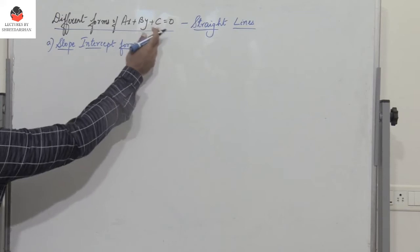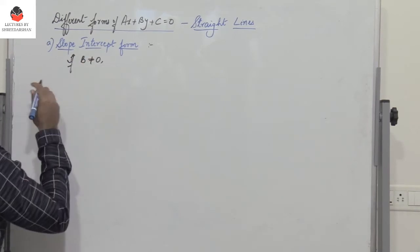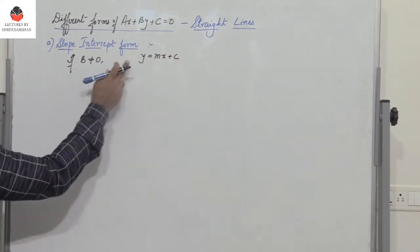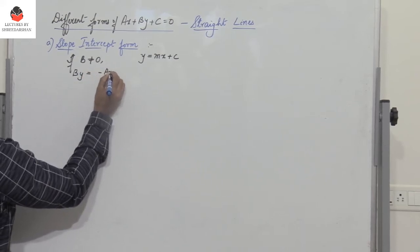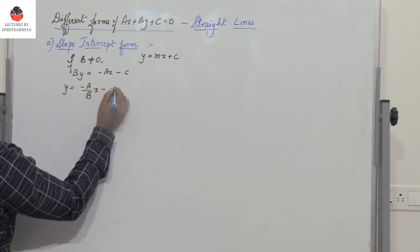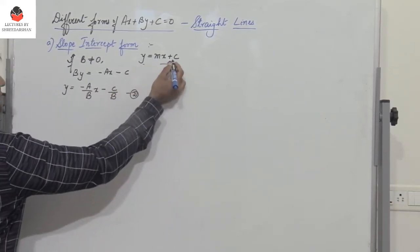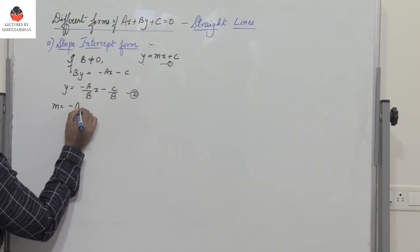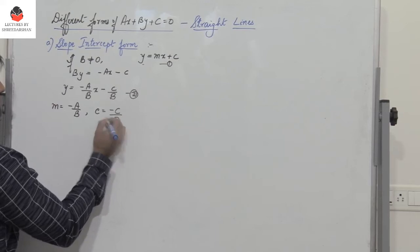We have AX plus BY plus C equal to 0, and if B is not equal to 0, then we have to express it in the form Y equals MX plus C. Retaining Y on one side, we get BY equals minus AX minus C, or Y equals minus A by B into X minus C by B. Comparing the two equations, we get M equals minus A by B and the Y intercept C equals minus C by B.